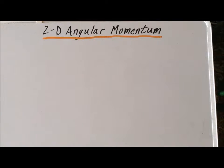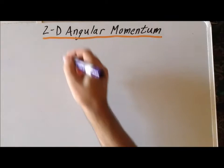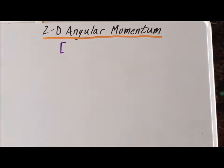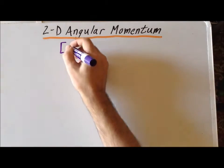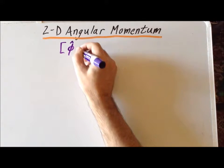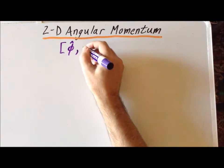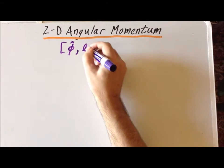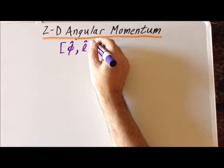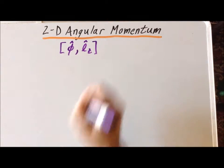Hello. In this video, we are going to determine the commutator in the case of 2D angular momentum between the angle phi and the angular momentum, which we're going to write as L sub Z.